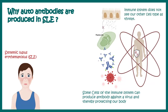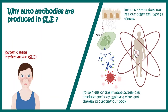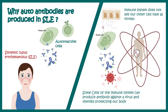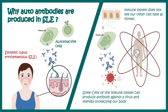Generally, our immune cells do not produce antibodies against our own cells, such as an epithelial cell. This is known as tolerance. But this tolerance mechanism is disrupted in case of systemic lupus erythematosus. Autoreactive B cells or plasma cells are produced which secrete antibodies against our own cells.